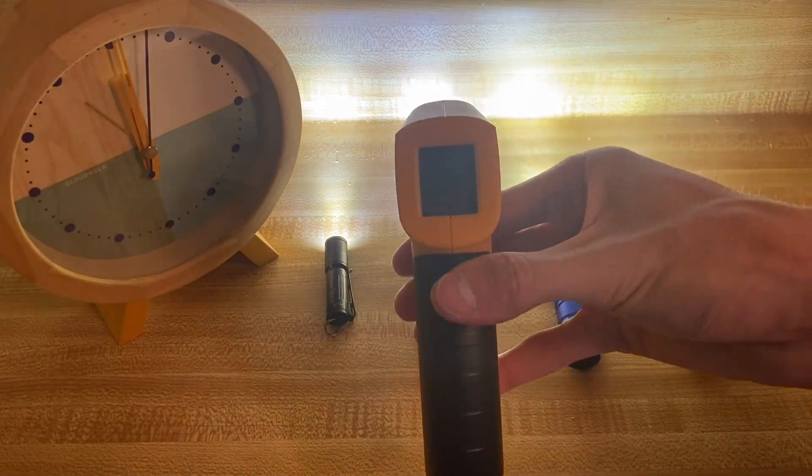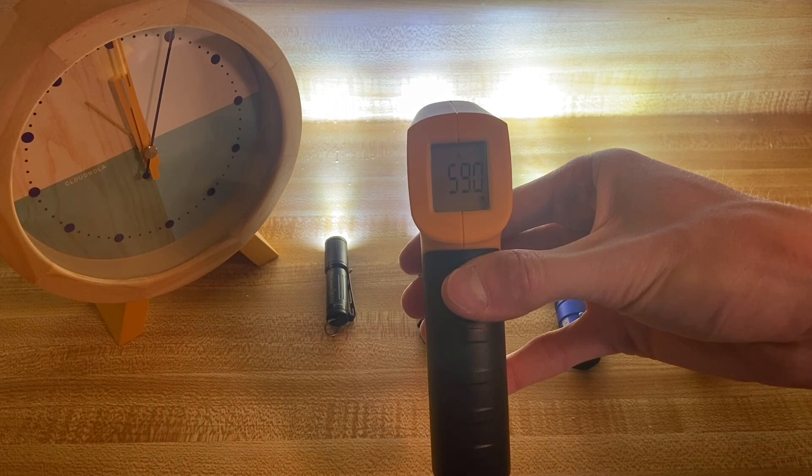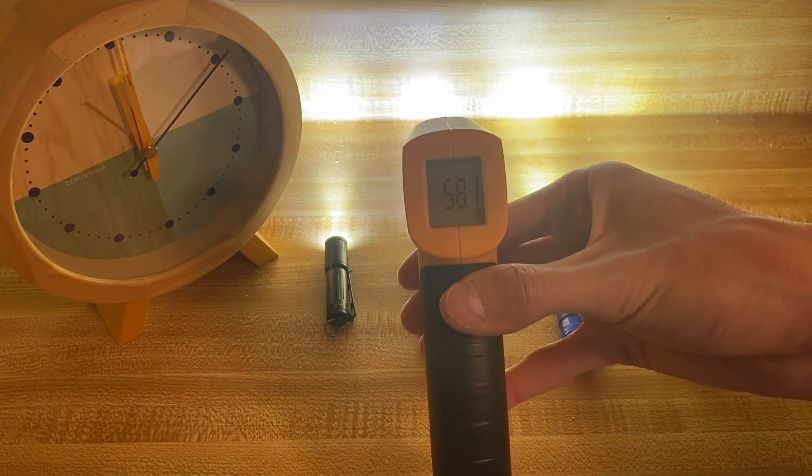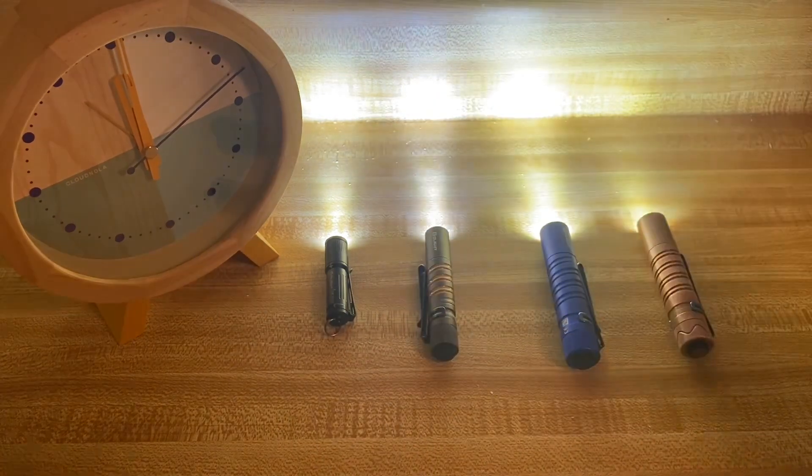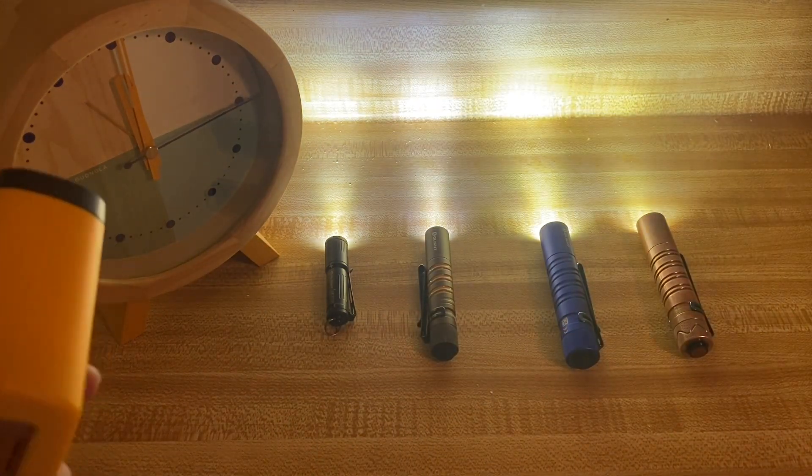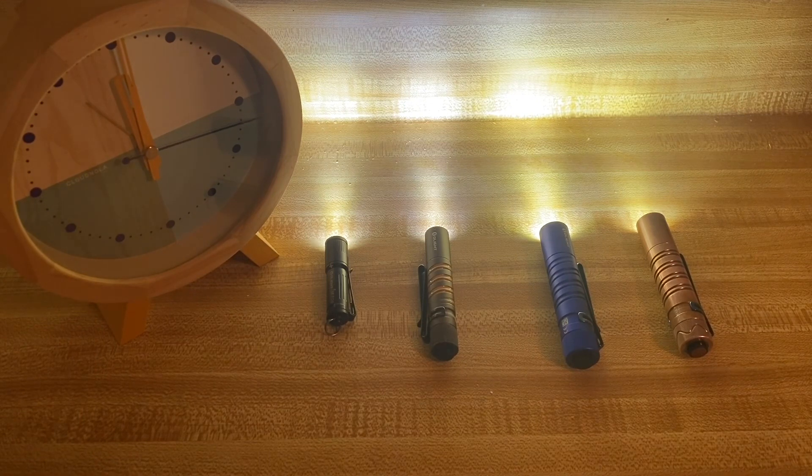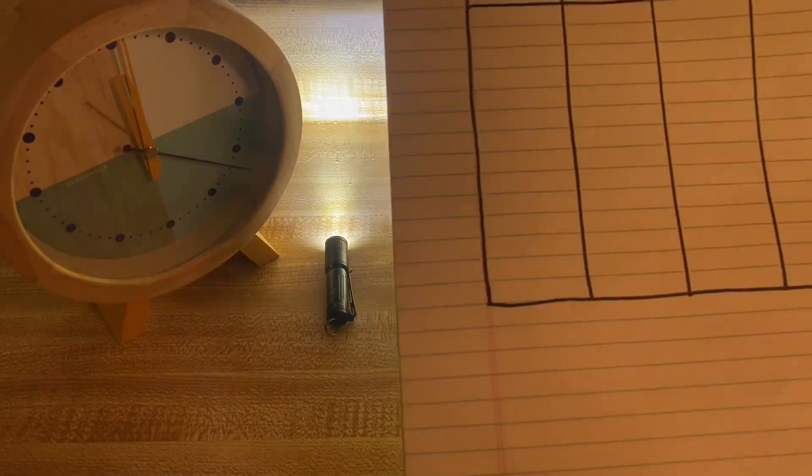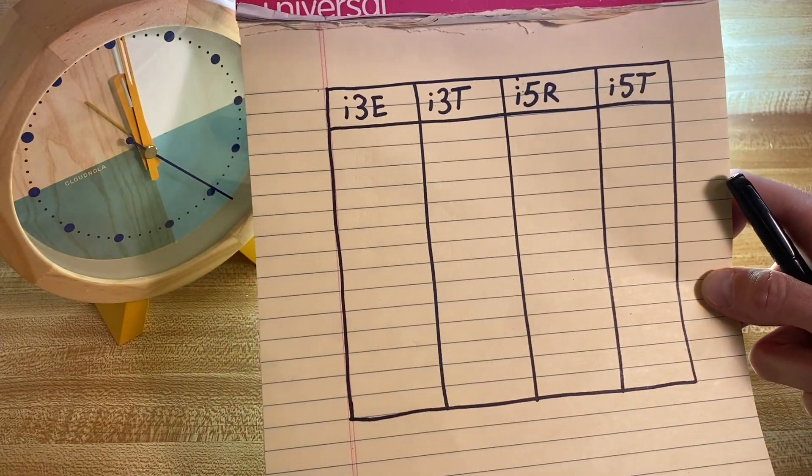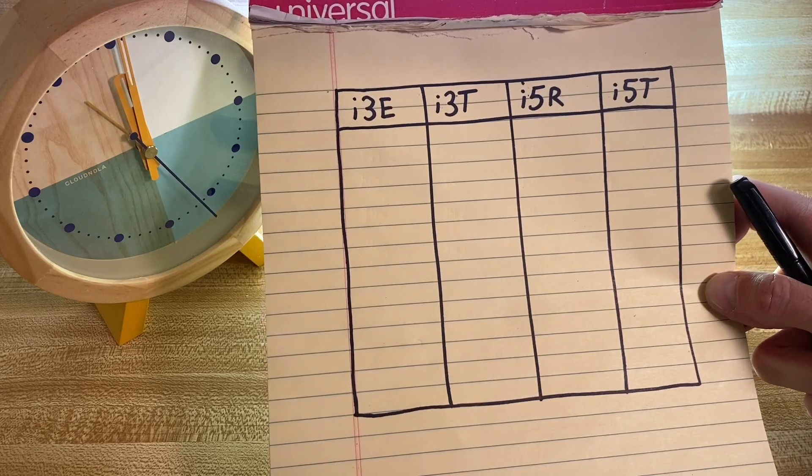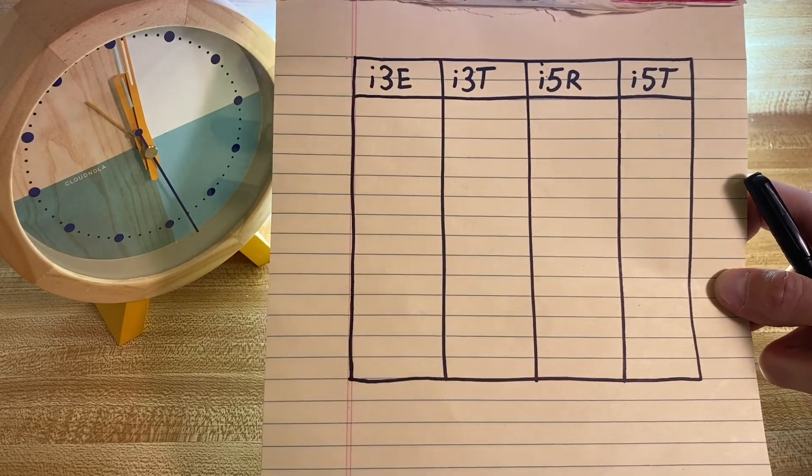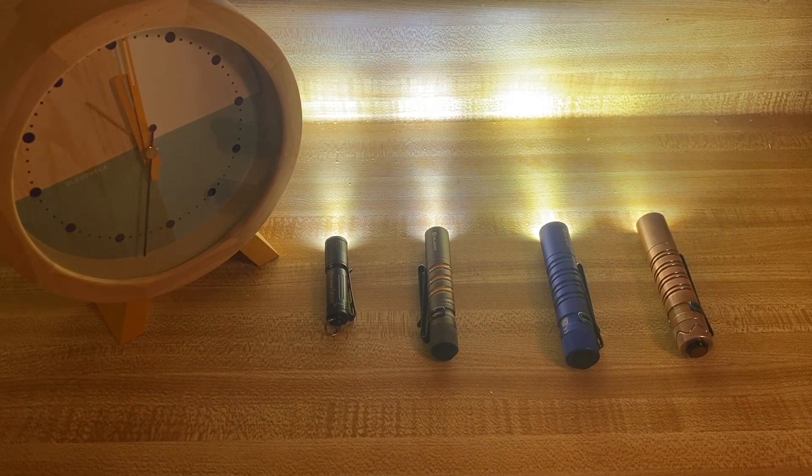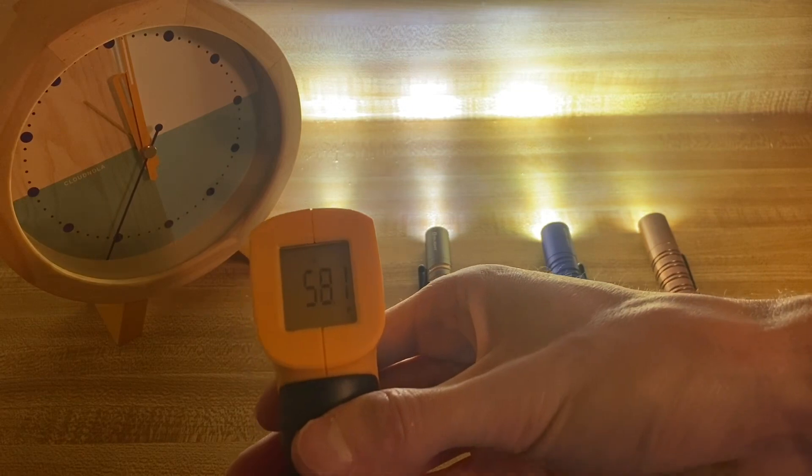Before I test the lights' temperatures, room temperature is about 57, 58 degrees or so. Let's take our first rounds of temperatures. I'm going to be charting them on this piece of paper and try to record the hottest temperature I'm able to for each light.